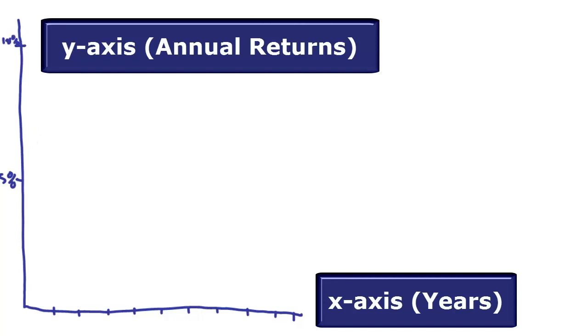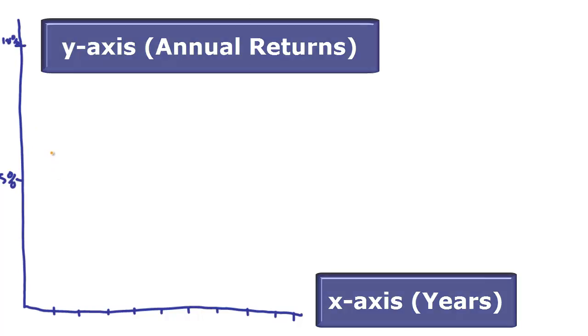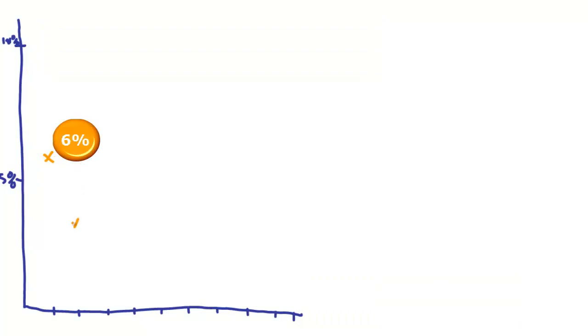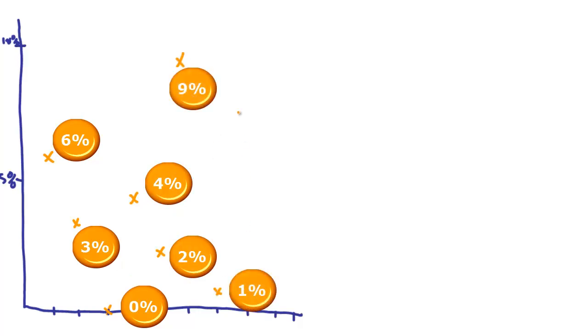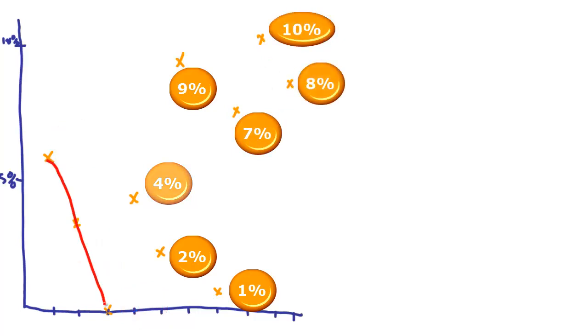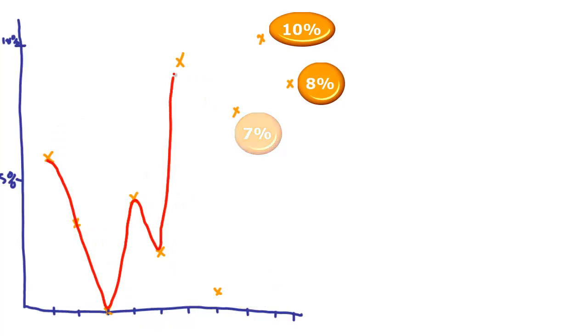Here we've got 10 annual returns from a single portfolio investment. So that's 6%, down to 3%, down to 0%, 4%, 2%, way up to 9%, right down to 1%, up to 7%, up to a fantastic 10%, and then to finish off with 8%. But how are these figures spread over the full 10 years?